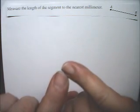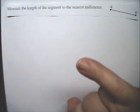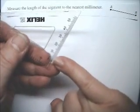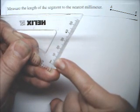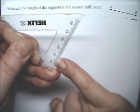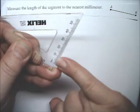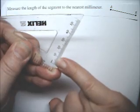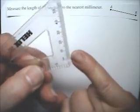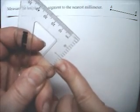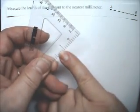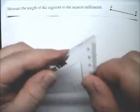A centimeter is about the width of your nail on your baby finger. See, 10 millimeters is one centimeter, so the width of my nail is a centimeter. And that's about the same as a half inch. See, from there to there is a half inch. A centimeter is a little bit smaller than a half inch.